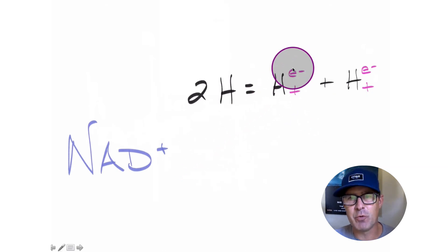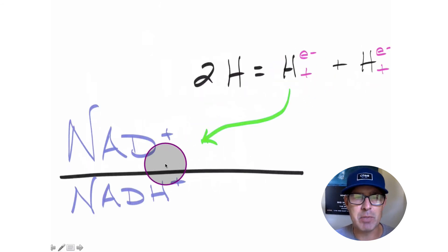First, if we take an electron and a proton—this whole hydrogen atom—and add it to NAD+, we end up with a molecule known as NADH+.